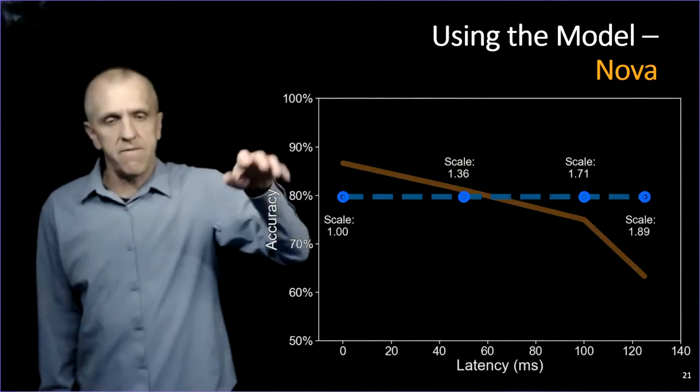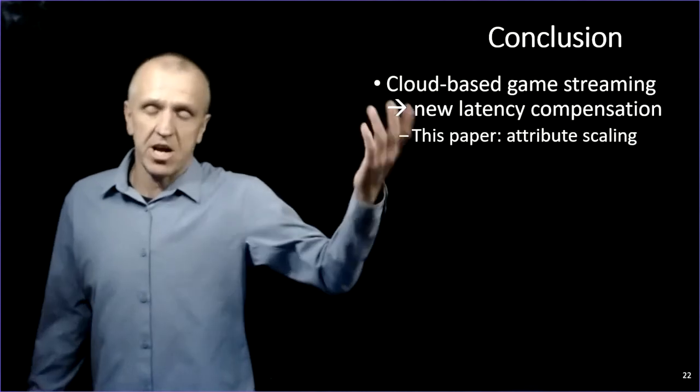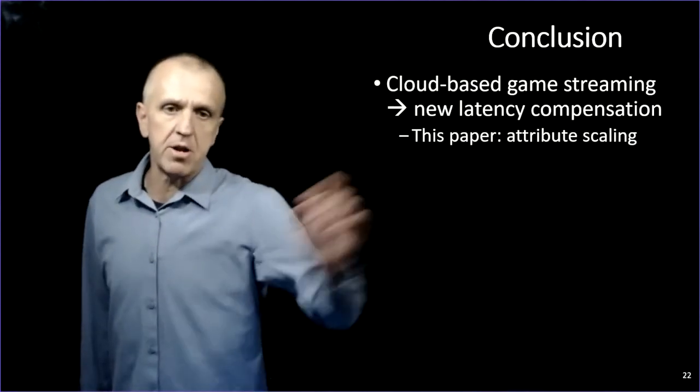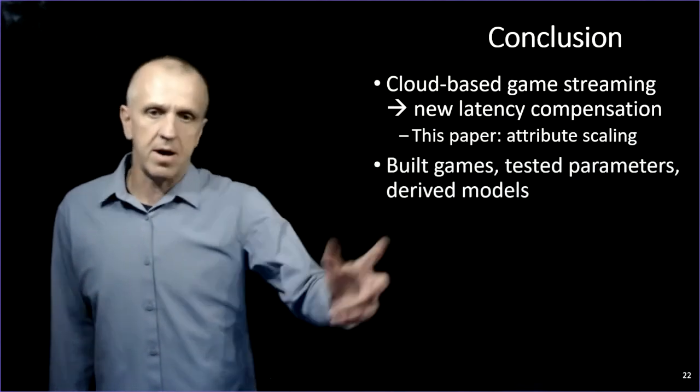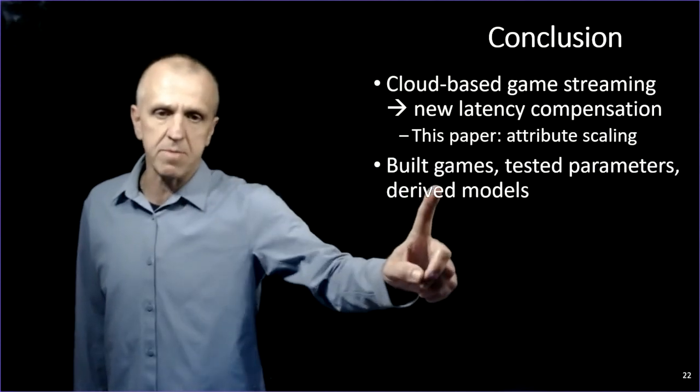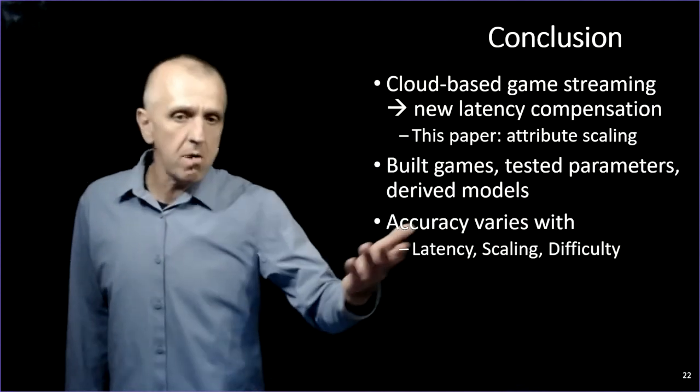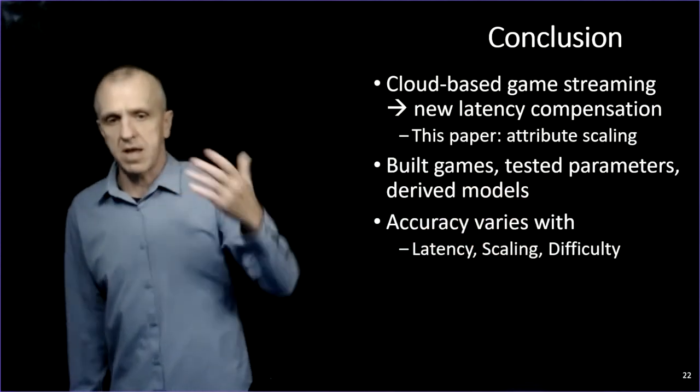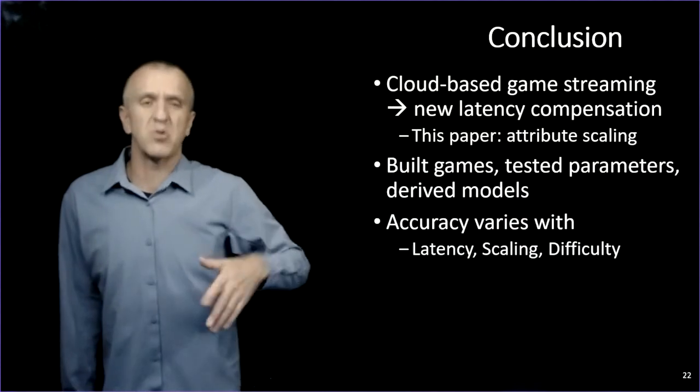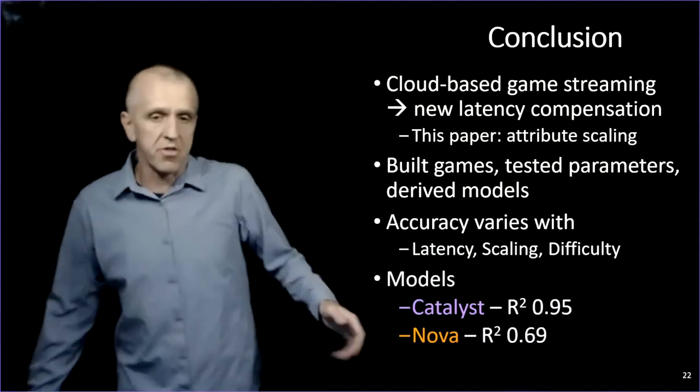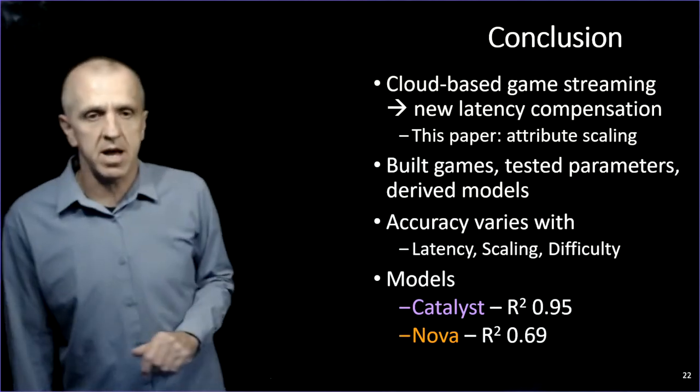And that brings me to the end of this paper, and we'll talk about next steps. So to rehash, cloud-based game streaming is coming. It's actually here. If you haven't tried it yet, go try it. This paper is talking about a new latency compensation technique that we were trying to develop for such systems called attribute scaling. And the first couple of steps, we've built some games. We've tested our parameters. We've derived models. And the idea is, what do we know? Well, player performance varies with latency, scaling, and difficulty. And more than just varies, we actually can use that to build models of player performance, which will let us adjust scaling automatically. And so the models work really well for Catalyst and Nova, and they let us pick scaling values that will keep performance at about the same rate.